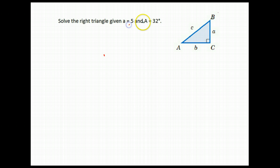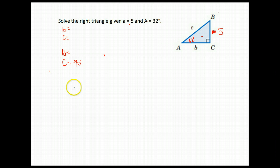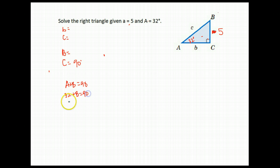Let's do another example where we're given a side and an angle. Side A has length 5 and angle A is 32 degrees. We can find our remaining angles: we need to find sides b and c, and angles B and C. Angle C we know is 90 degrees right off because it's our right angle. Then since A and B together must total 90, and we know A is 32 degrees, angle B equals 58 degrees.